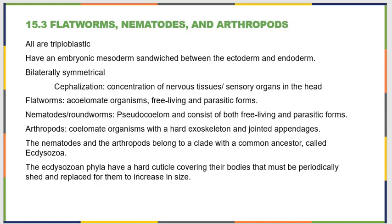Flatworms are acoelomates, and both free-living and parasitic. Nematodes, also known as roundworms, are pseudocoelomates that are also free-living and parasitic. Arthropods are eucoelomates — true coelomates — with hard exoskeletons and jointed appendages. Nematodes and arthropods belong to a similar clade called the Ecdysozoa. These all have a hard cuticle covering their body that must be periodically shed and then replaced in order for them to increase in size.